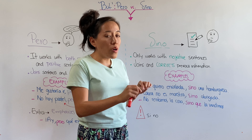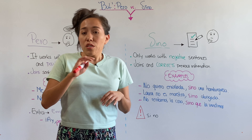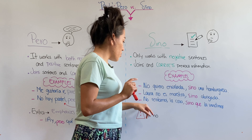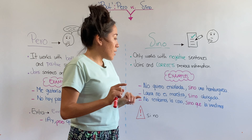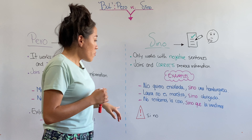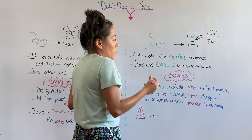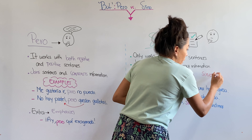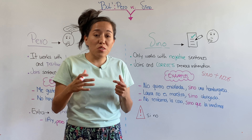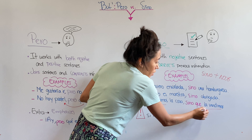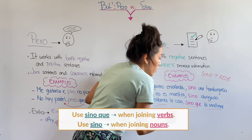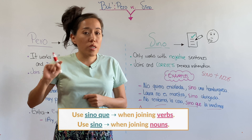Now let's talk about 'sino'. 'Sino' is also used to connect sentences, but you're also going to use it to correct the information you just said. Because of this, 'sino' only works — and this is very important — it only works with negative sentences. Here are some examples: 'no quiero ensalada sino una hamburguesa' — I don't want a salad but rather a burger. 'Laura no es maestra sino abogada' — Laura is not a teacher but a lawyer.